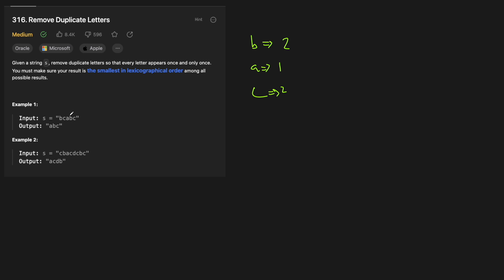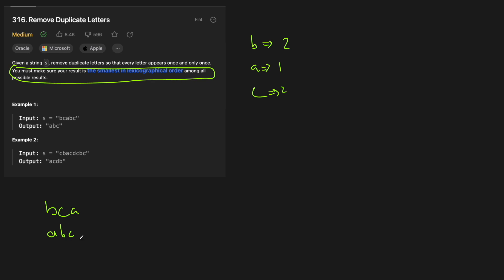You might think we can just chop the last two characters and we're done — but the answer is actually ABC, not BCA. They both get rid of letters such that each one occurs once and only once. But remember, we need to put our solution in lexicographical order. ABC would come before BCA in a dictionary because A comes before B. So we actually prefer ABC. That's why it's ABC instead of BCA, even though they both satisfy the removing-duplicates requirement.